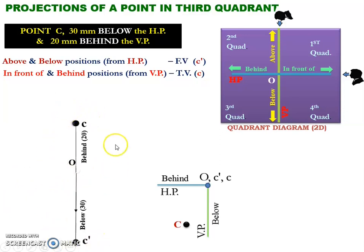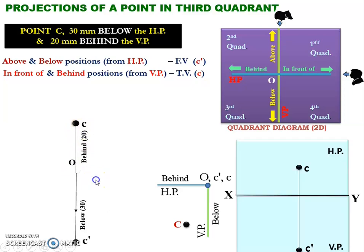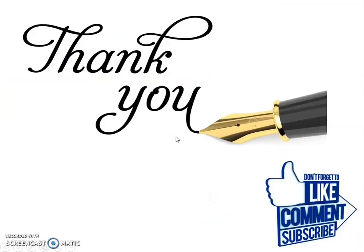Now we got the final solution of this particular problem. The point O is located here, C dash is 30 mm below the origin point, and point C is located 20 mm above the origin point. We can represent the same solution on a 2D paper like this. Thanks for watching this video. Don't forget to like this video and give your comments, and also don't forget to subscribe to this channel.